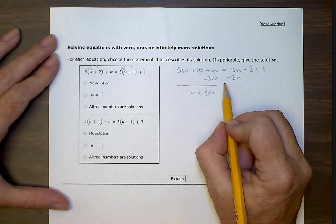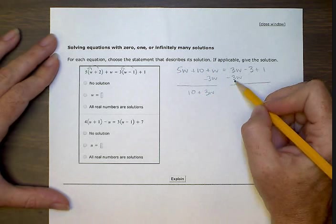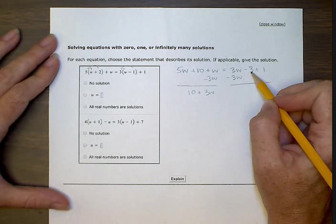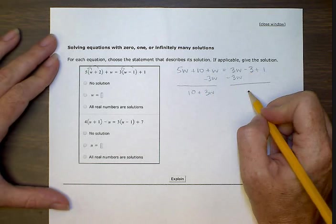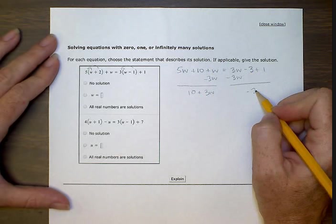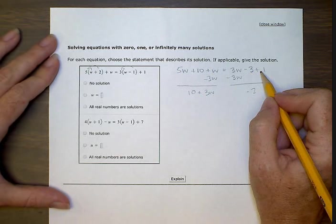And on this side, this made zero, and then we have this negative three and this one. So let's condense that to negative two. Right? Negative three plus one is negative two.